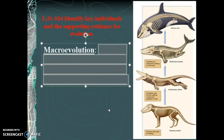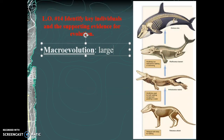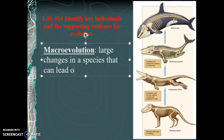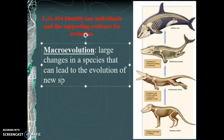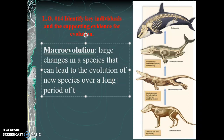We talked about microevolution in our previous chapter when discussing how populations evolve — that's looking at evolution at the population level. Macro, or macroevolution, refers to large changes in a species that can lead to the evolution of new species over a long period of time. We're talking tens of millions of years for this process to occur.